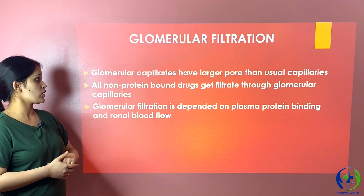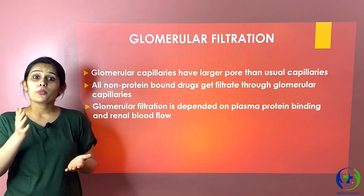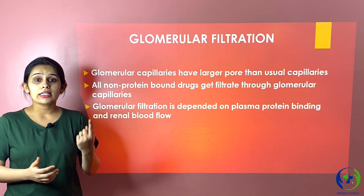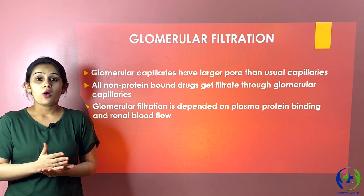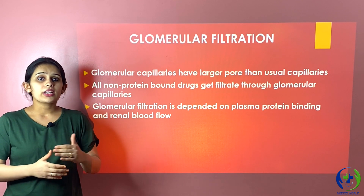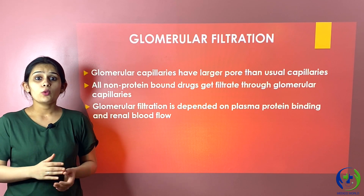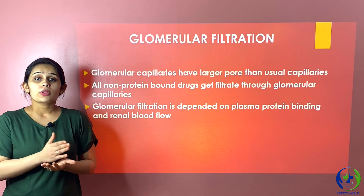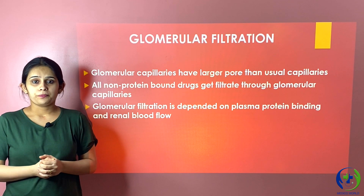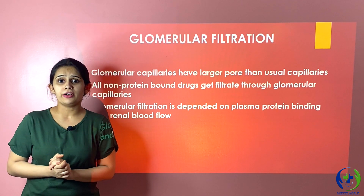The first process in detail is glomerular filtration. The pores of the glomerular capillaries are larger in size than usual capillaries, so both lipid-soluble and water-soluble drugs get filtered through them. However, only the free drug — the non-protein-bound drug — gets filtered. Protein-bound drugs do not get filtered because in normal conditions the glomerular capillaries do not filter protein. Therefore, higher the plasma protein binding of the drug, lower will be its glomerular filtration. The normal glomerular filtration rate is 90 to 120 ml per minute.